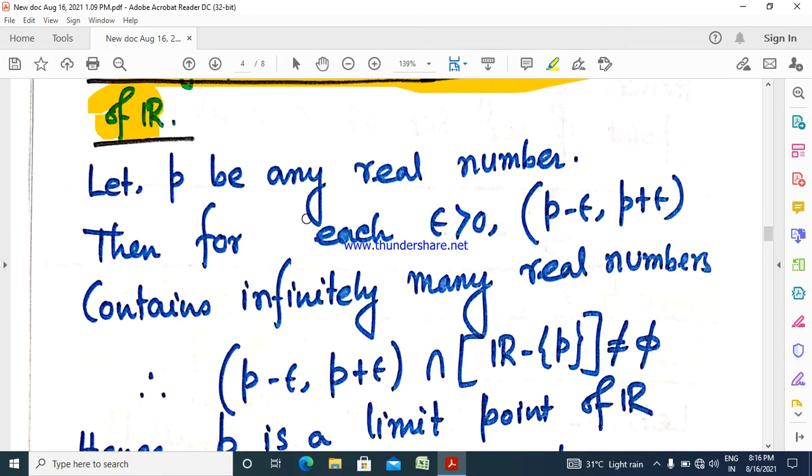Let p be any real number. For each epsilon greater than 0, the open interval (p - epsilon, p + epsilon) is obviously a neighborhood of p.